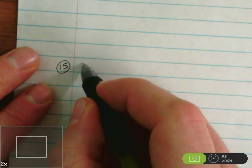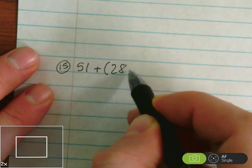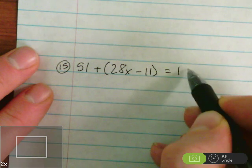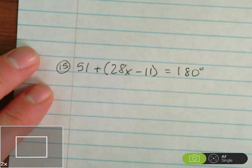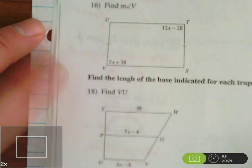They add up to 180 degrees. So 51 plus 28x minus 11 equals 180. So we have 51 plus 28x minus 11 equals 180. Alright. Next, we've got number 16.